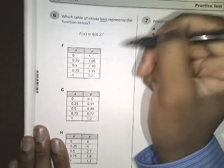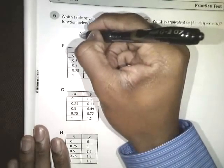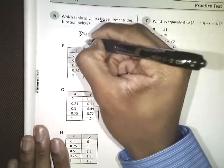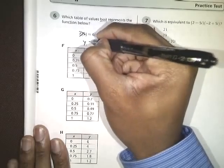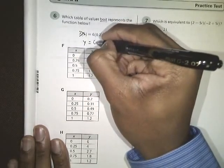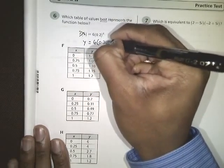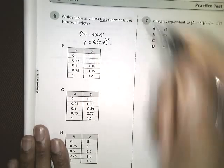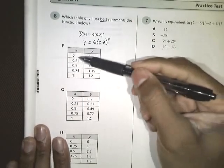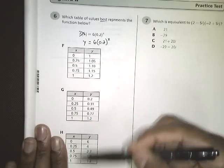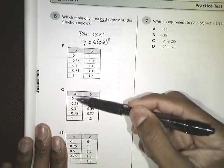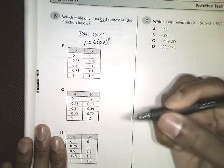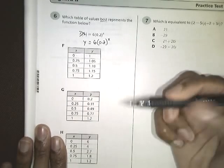f of x is just function notation for y. So f of x and y mean the same thing. So I'm just going to rewrite this equation as y equals 6 times 0.2 raised to the x power. Well, every single one of our answer choices, the first x value that they plug in is 0. So I think that we should also plug in 0 and see what we come up with.